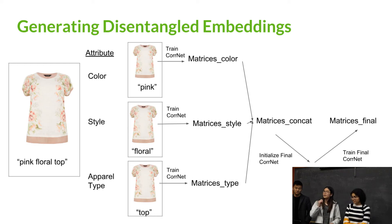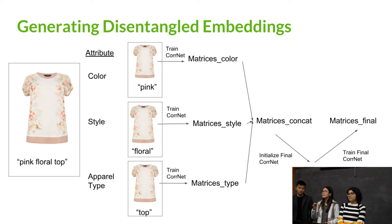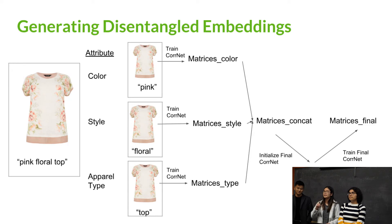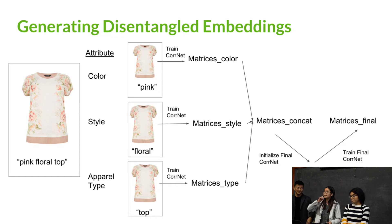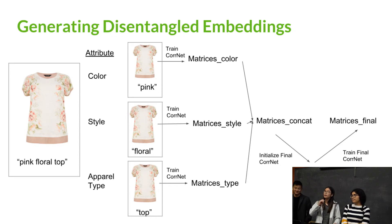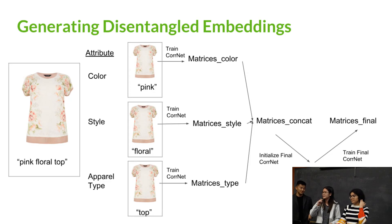They then needed to combine these three different embeddings into one coordinate space able to take in both the entire image and the entire textual description. The way they do that is by initializing this coordinate with the three separate matrices learned from the three separate embeddings, and then adding special regularization so that the attributes would not mix with each other. This way they were able to create disentangled embeddings.